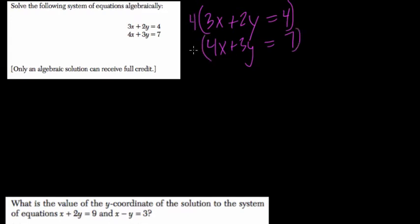This helps us tremendously. Watch what happens: you get 12x plus 8y equals 16 when you multiply everything in the first by 4. Now multiply everything in the second by 3, and we get 12x plus 9y equals 21.